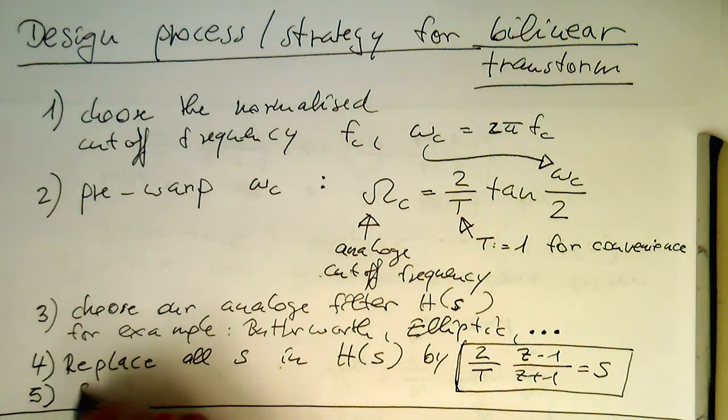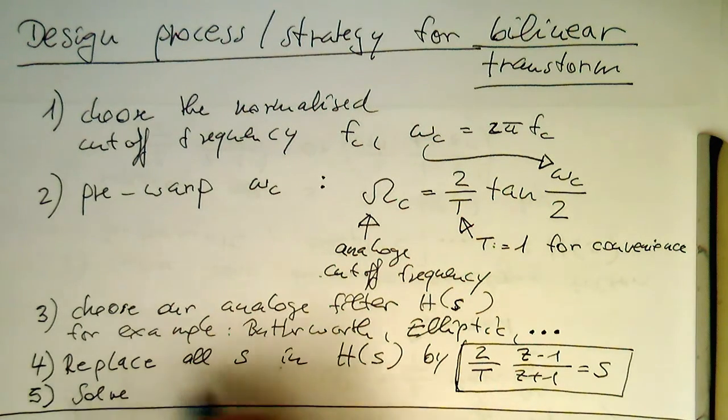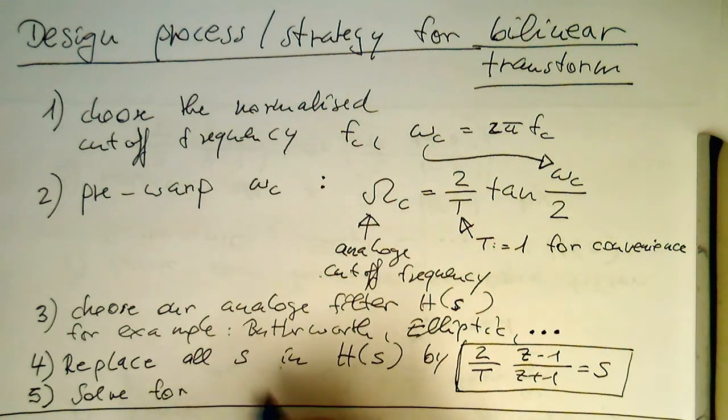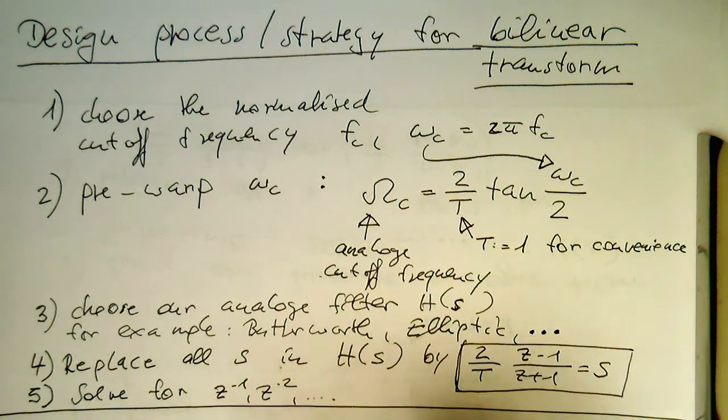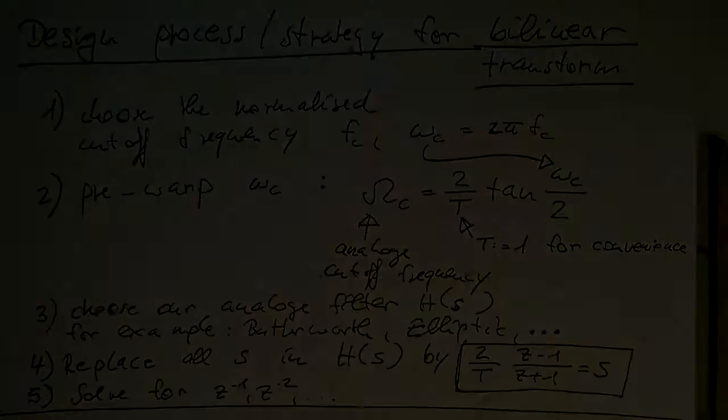In the last step, solve for z minus 1, z minus 2, and so on, so that we can turn it into a data flow diagram.